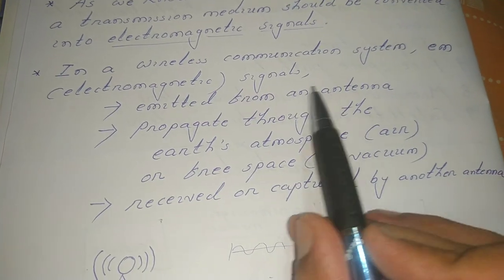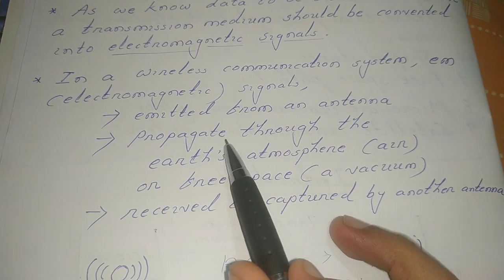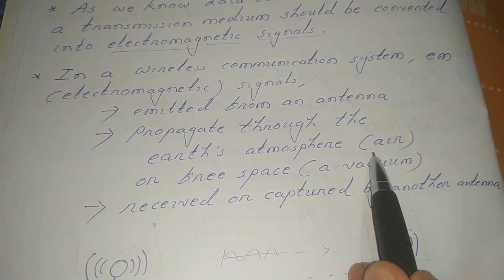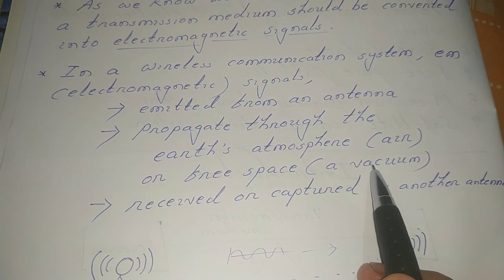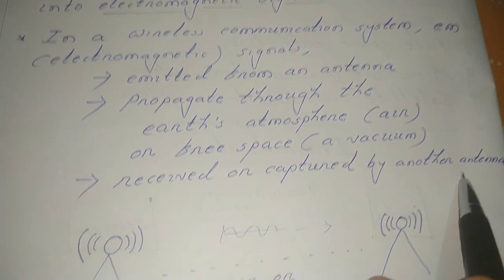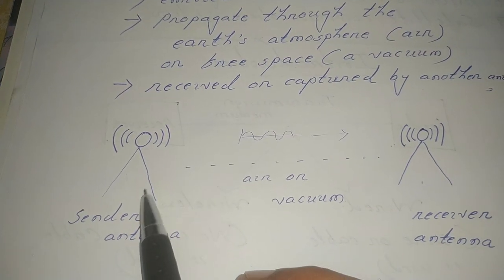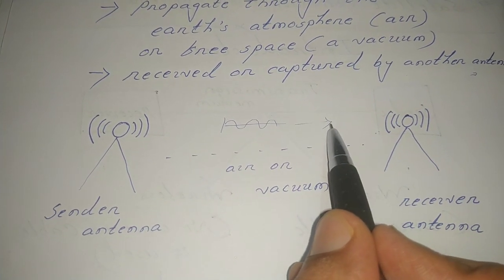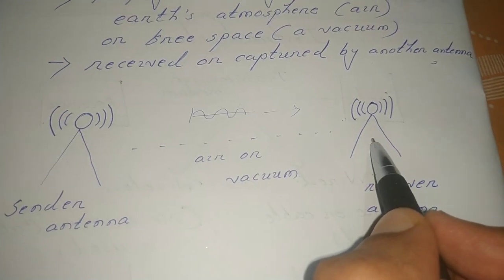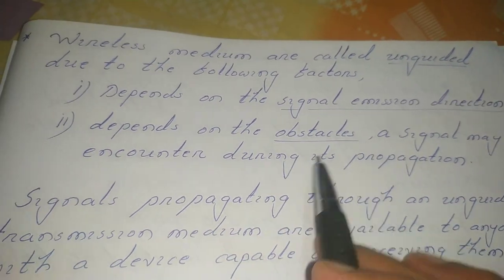In a wireless communication system, an electrical signal must be generated or emitted from an antenna, and that signal should propagate through either the Earth's atmosphere — also called air — or free space, also called vacuum. It should then be received or captured by another antenna at the receiver side. As shown in the diagram, the sender-side antenna produces the signal, which passes through the air or vacuum — our wireless media with no cable or wire — and is captured by the receiver antenna.